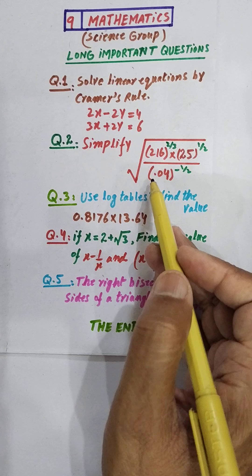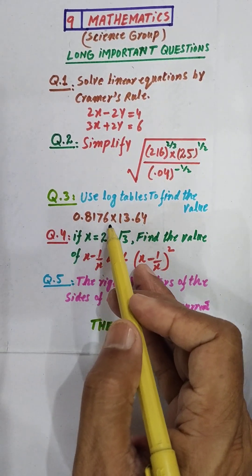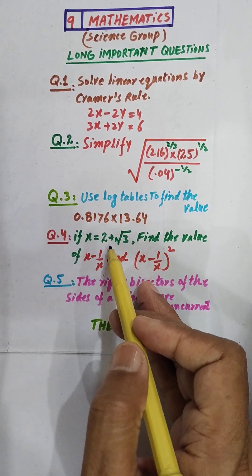Question 3: Use log tables to find the value 0.8176 multiply 13.64. Question 4: If x equals 2 plus 3 and root, find the value of